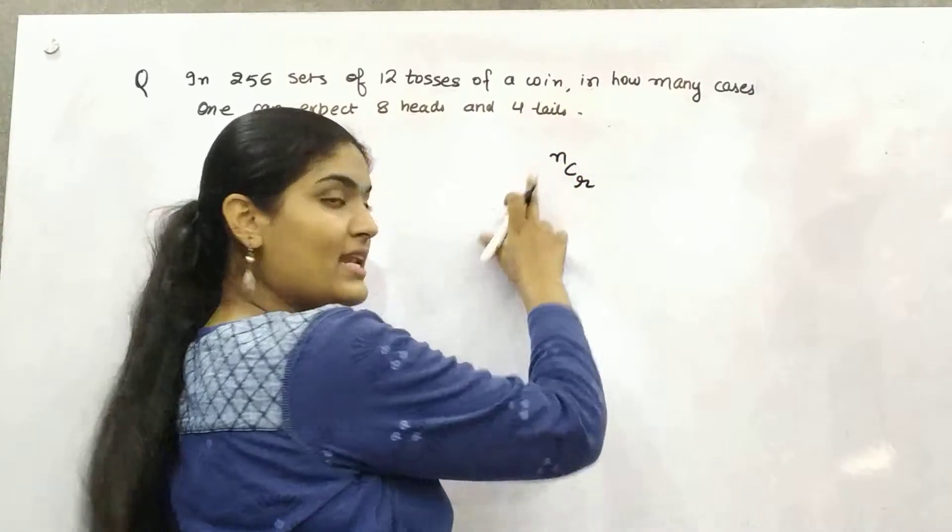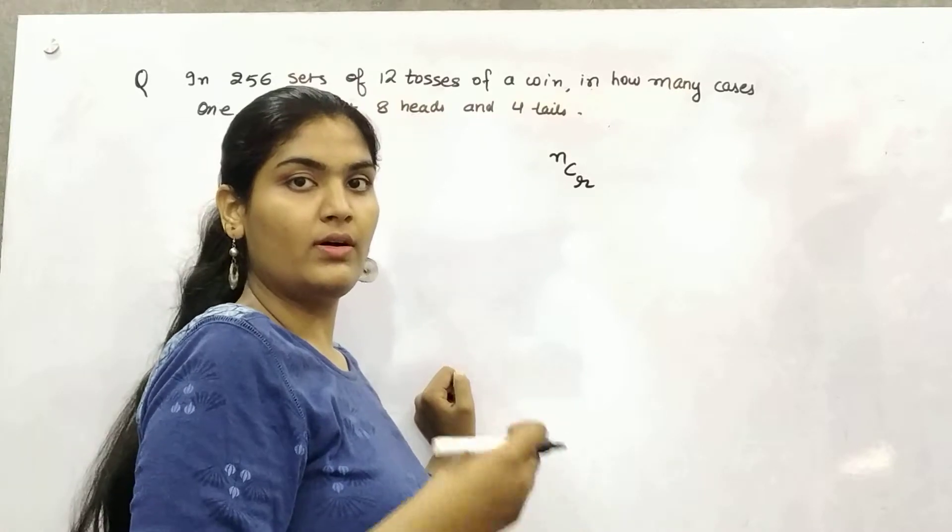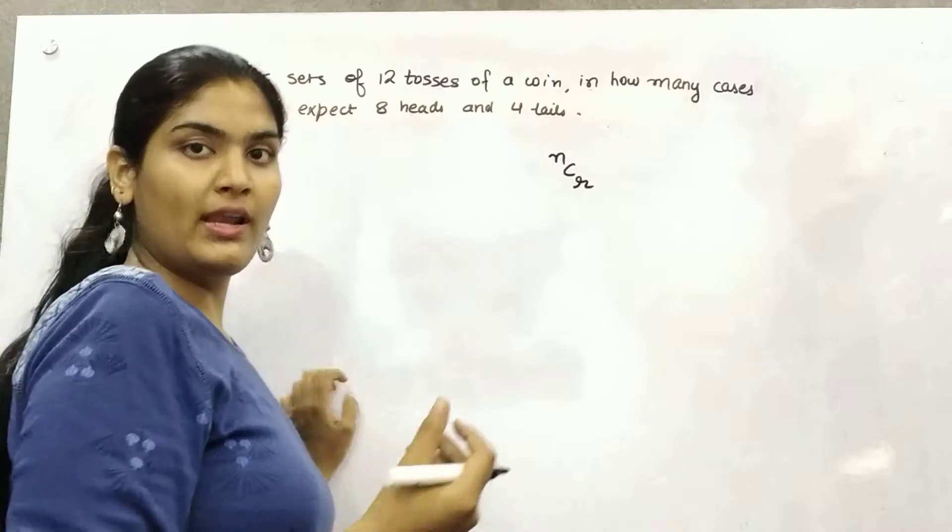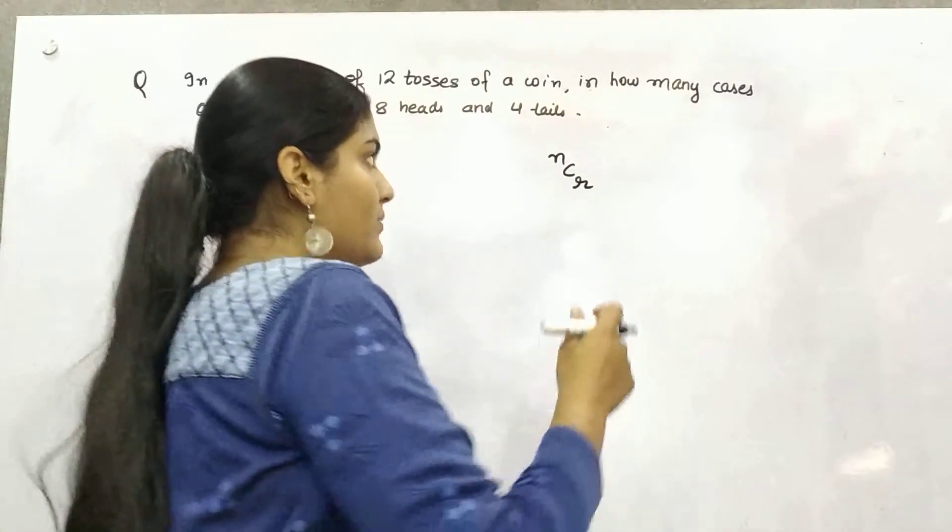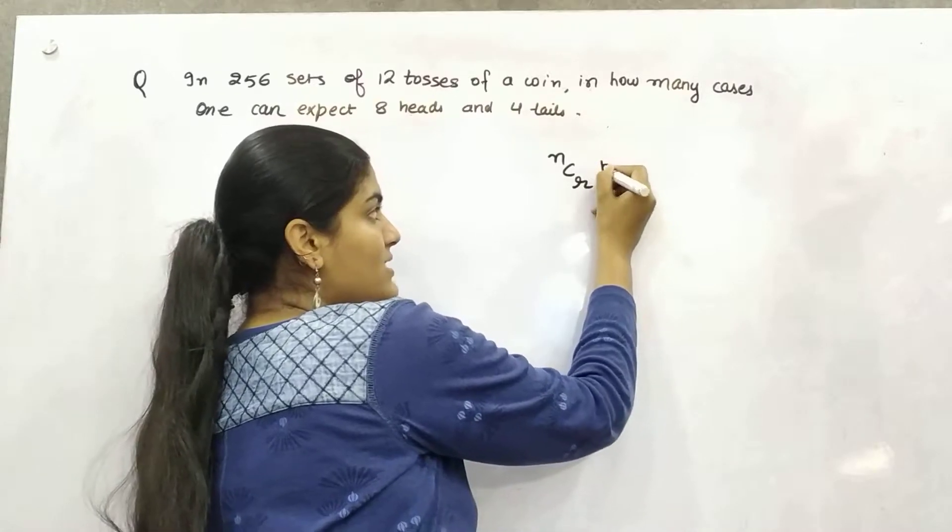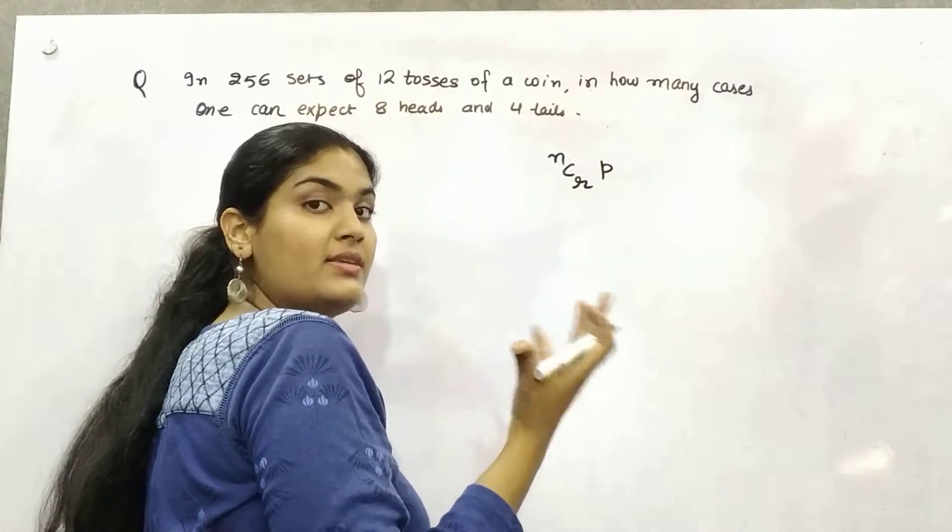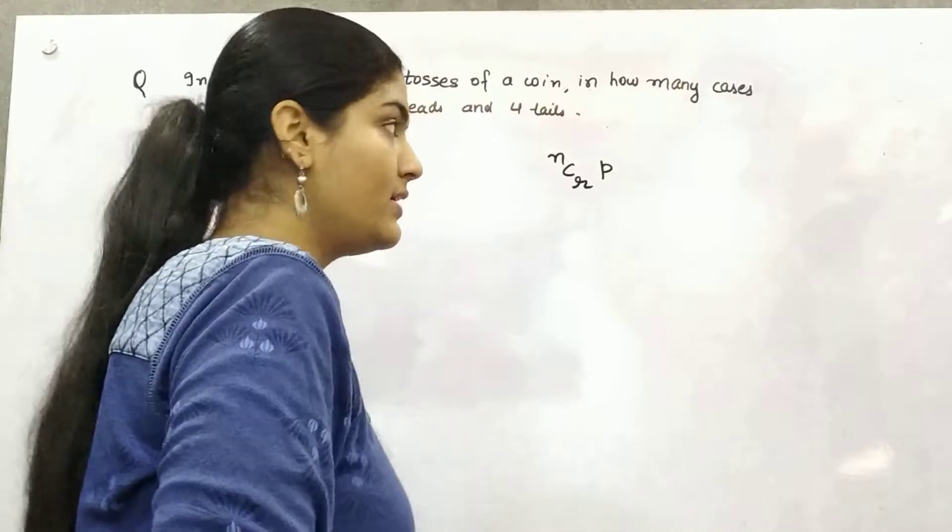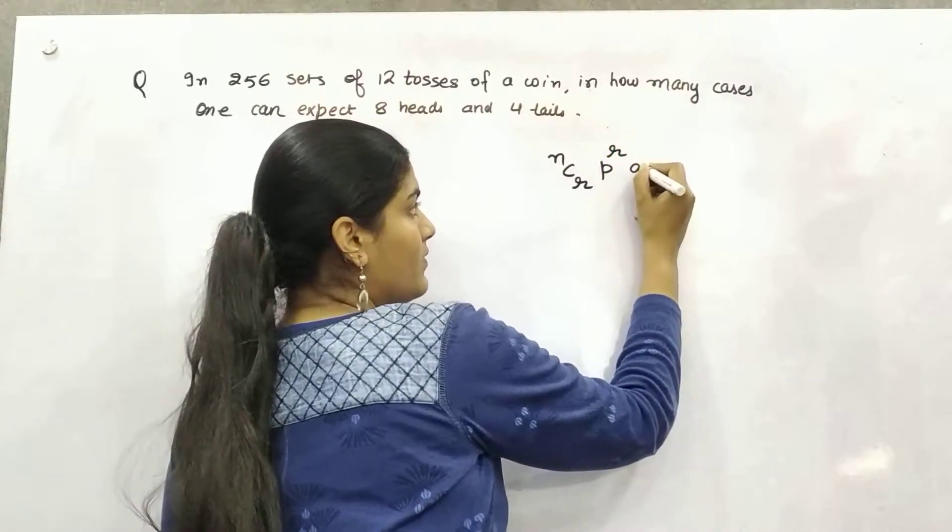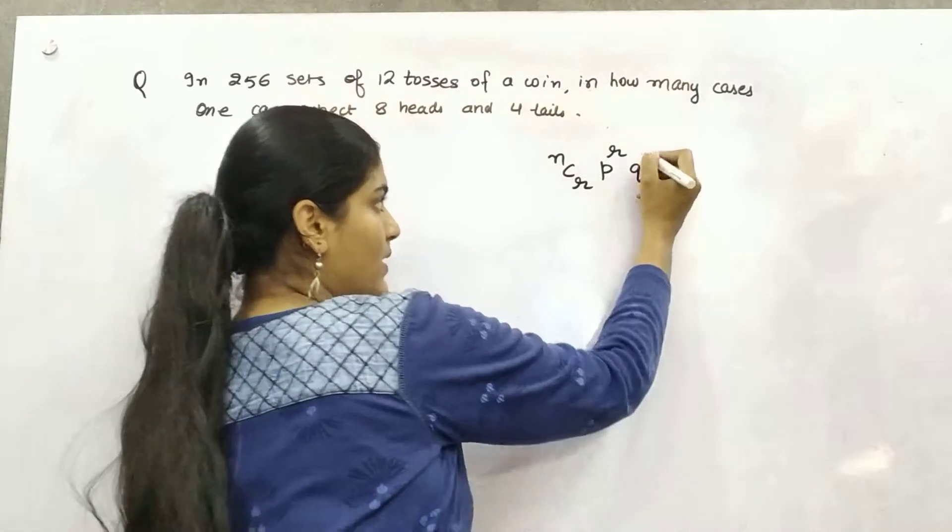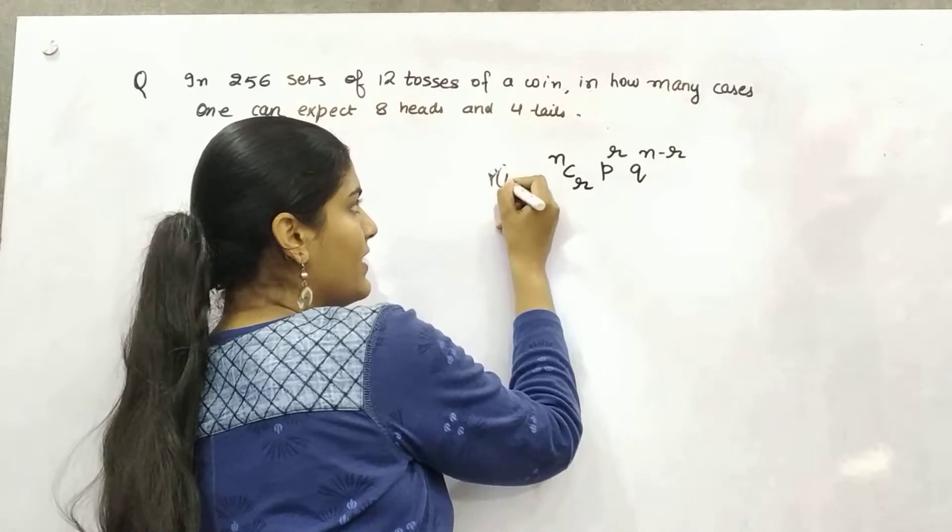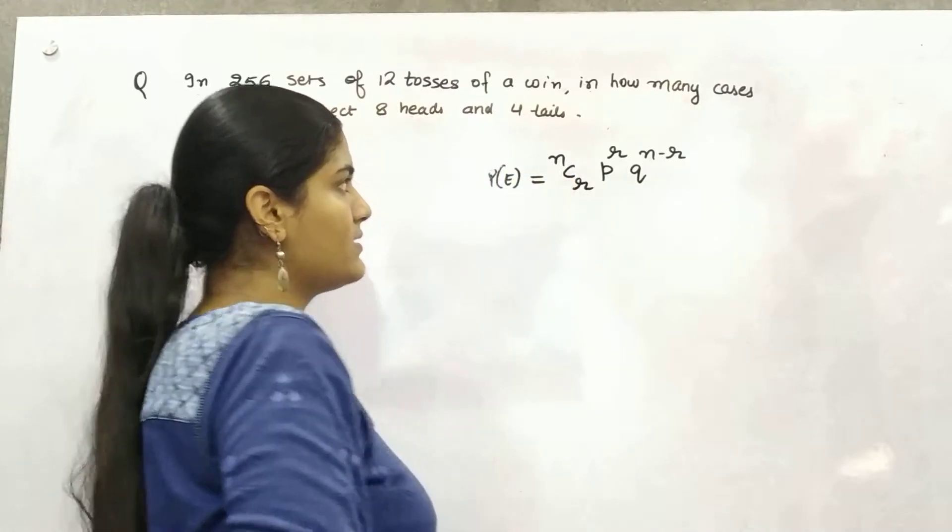So in that case, the formula is NCR where N is your total number of events. Then R is what you want to find out, means how many times you are doing it out of total. And then P is your success event, raised to power R. Q is your failure event, N minus R. This is your probability of getting a particular event.